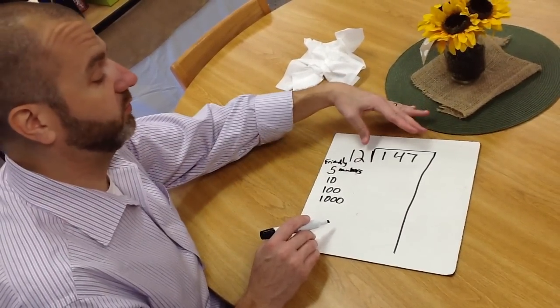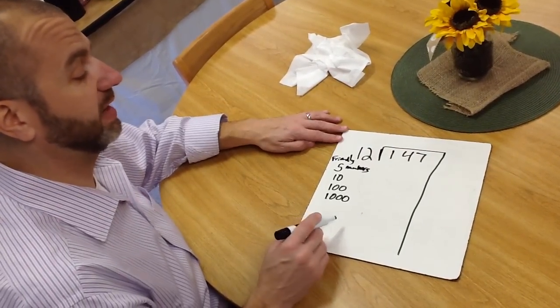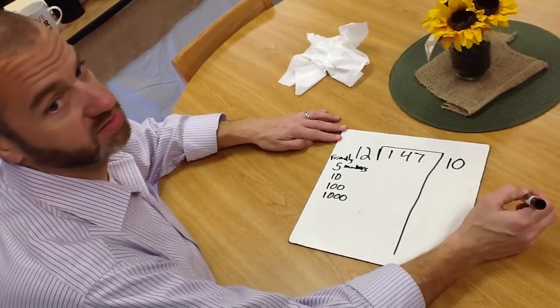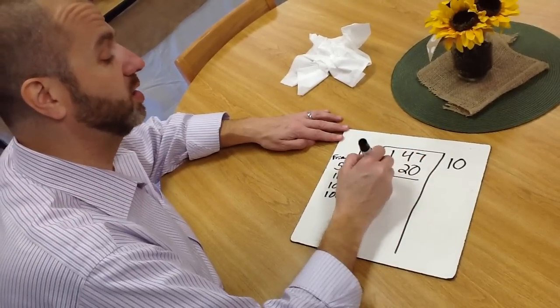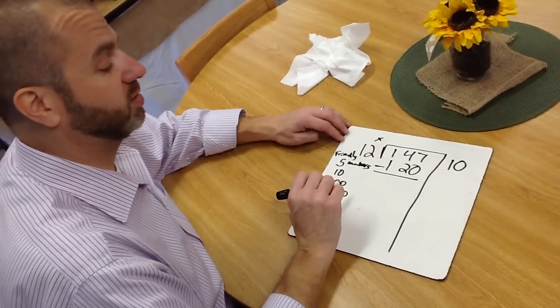So can 12 go into 147? Can we make groups of 12 out of 147? And the answer is absolutely yes. We can make at least 10 groups. We're not saying it's going to be perfect, but we're saying we can get at least 10 groups, and we can do 10 times 12, giving us 120.